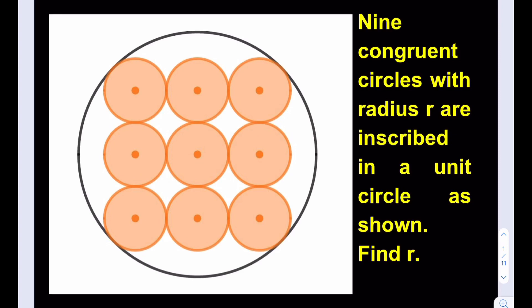Notice that we do have a unit circle, so its radius is 1. Nine congruent circles were inscribed in this circle — they're all tangent to each other, and four of them are also tangent to the large circle. As always, we're going to start with connections, so let's go ahead and make some connections here.